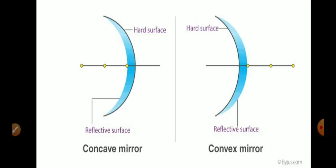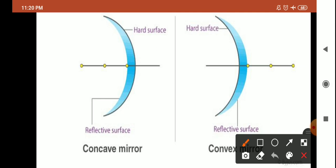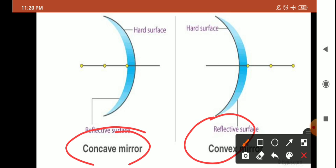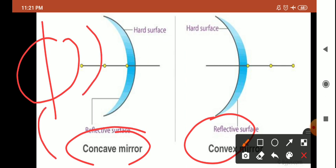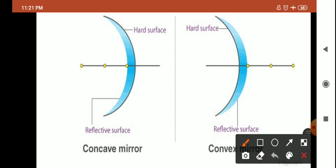These spherical mirrors are also known as curved mirrors because they are obtained from a hollow sphere. If we take a hollow sphere and cut it, we get these curved parts. That is the reason they are known as spherical mirrors or curved mirrors, and spherical mirrors are of two types: concave mirror and convex mirror.